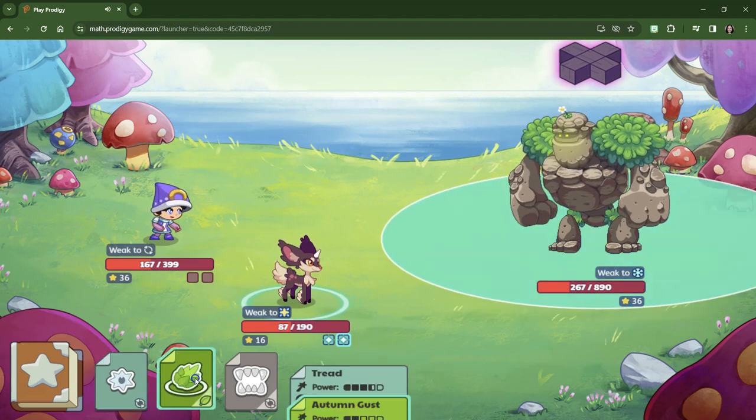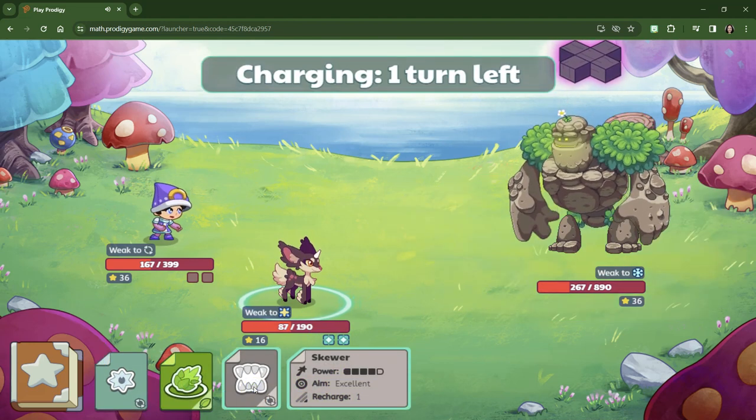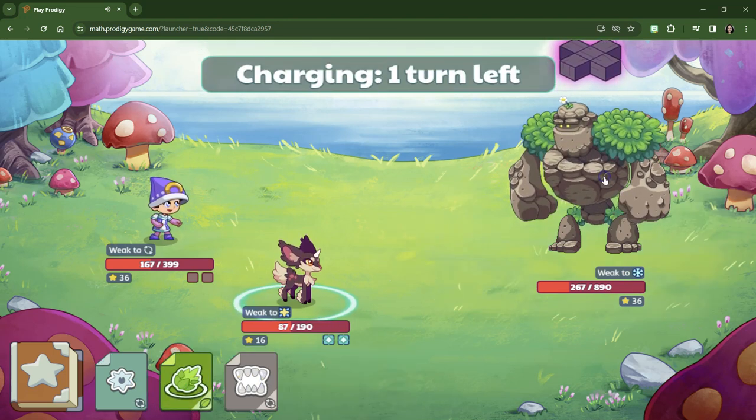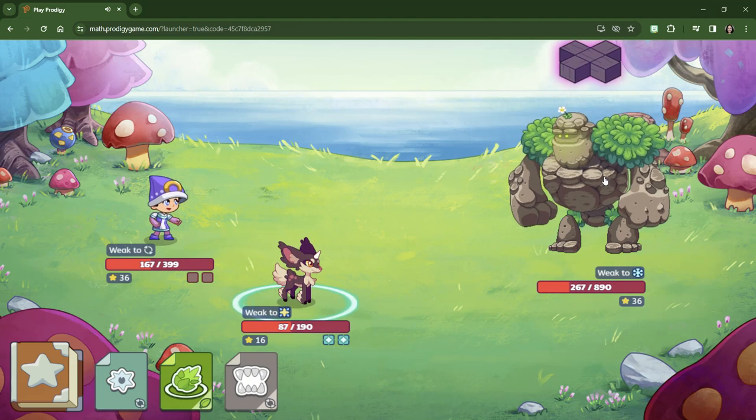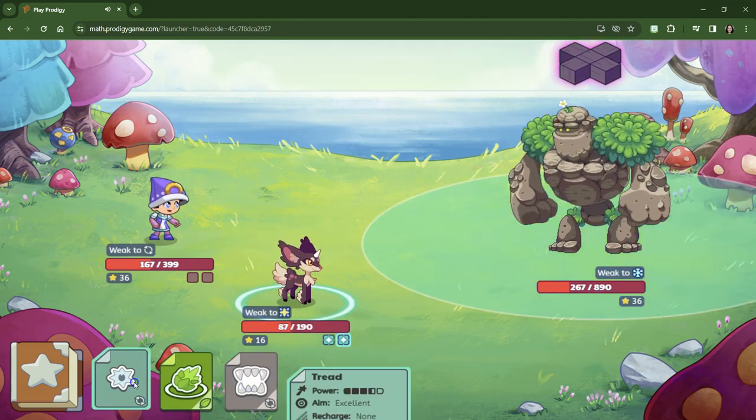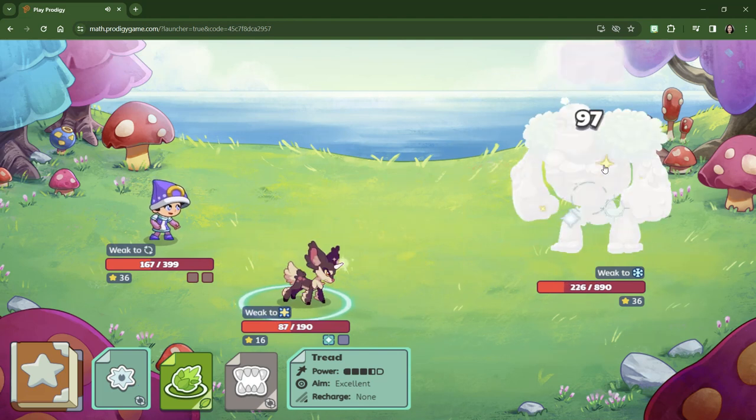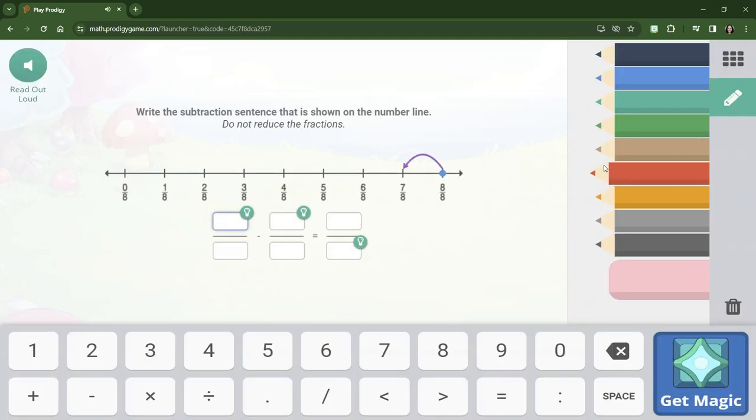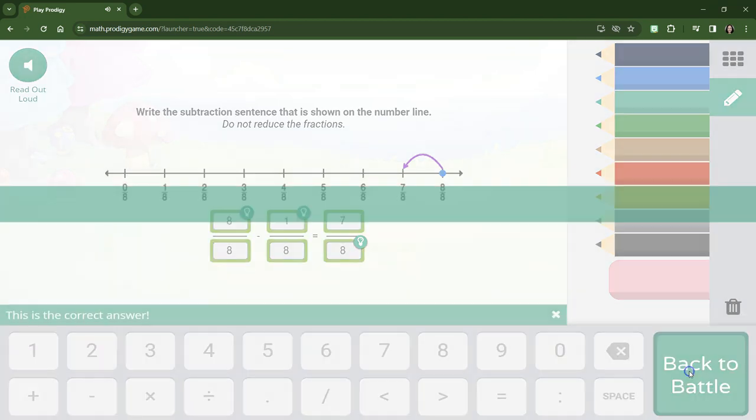Tread has tons of power. Tread has... Skewer has slightly more power than tread. We're going to have to do skewer, I think. Oh, skewer is still recharging. So we have to use tread. Oh, so close. We start at 8. We did one jump backwards. 8 minus 1 is 7. And all our eighths stay the same.